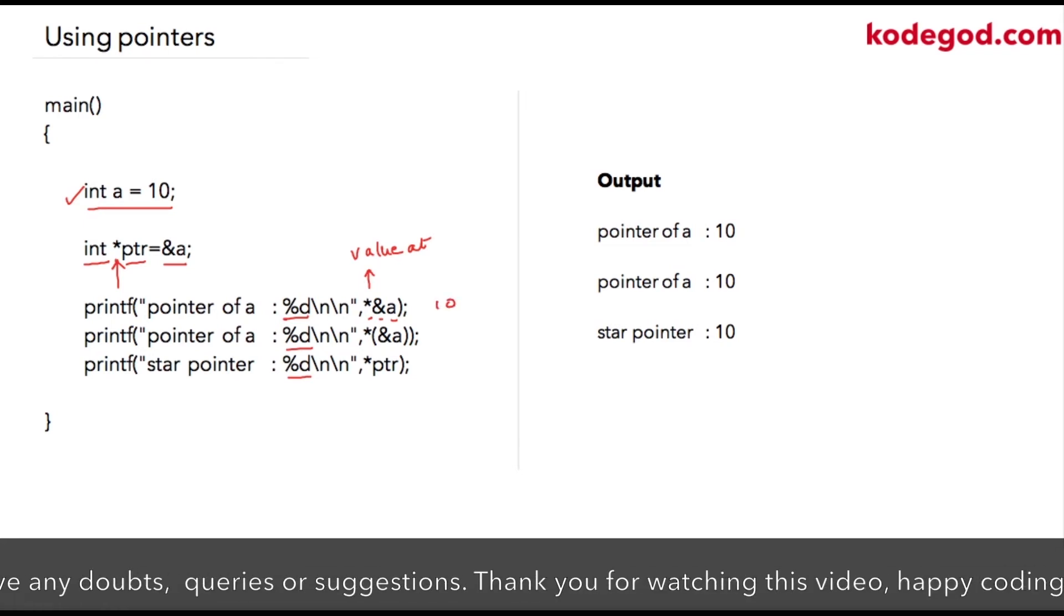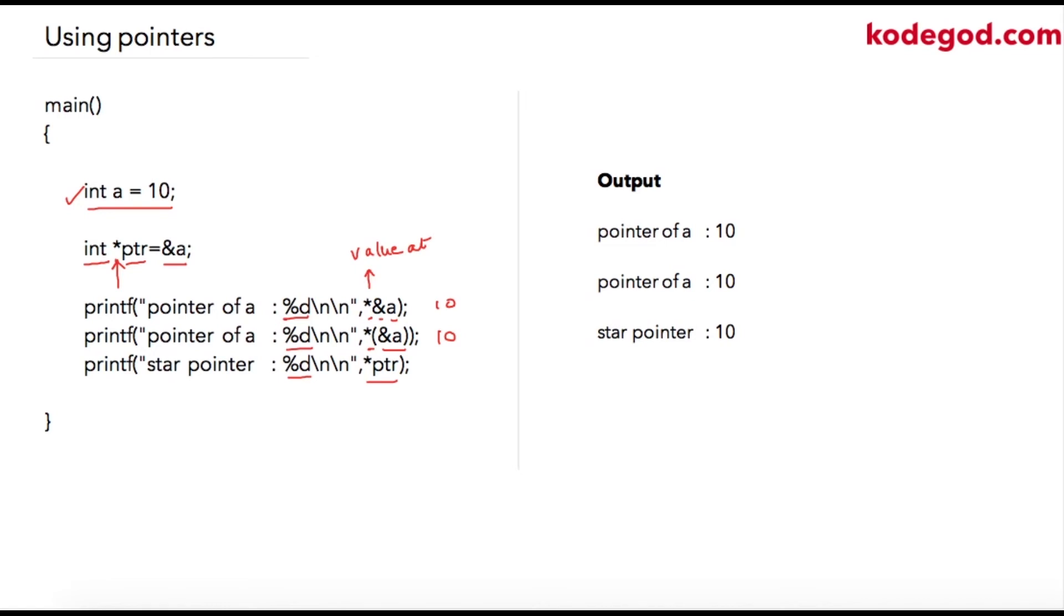Similarly, in the next line we can write star and inside parenthesis address of a, so both are the same. It is just to make it better understandable I'm writing it like this, so this will also print 10. Alternatively here we are writing star ptr. So star again is value at, and ptr because it stores address of a.